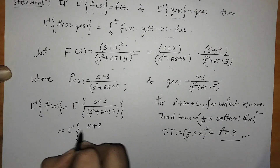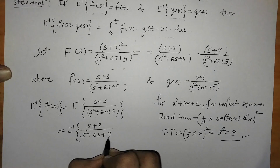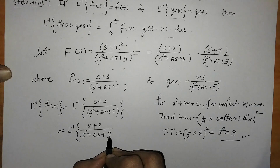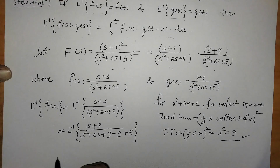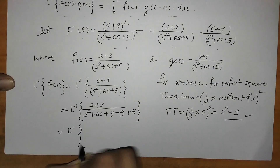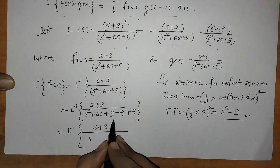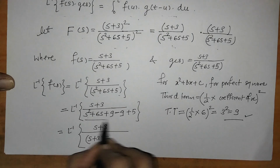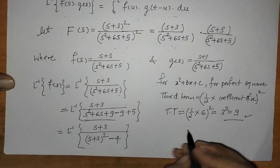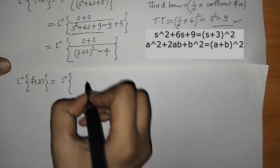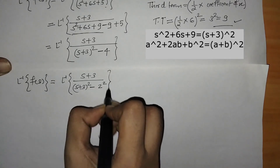So we have (s + 3)/(s² + 6s + 9 − 9 + 5). We can write this as L inverse of (s + 3)/((s + 3)² − 4), which is (s + 3)/((s + 3)² − 2²).